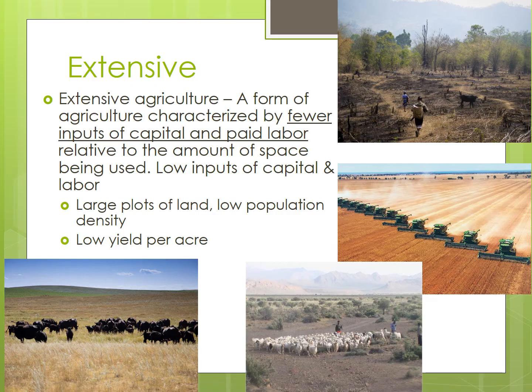In fact, shifting cultivation and nomadic pastoralism occupy the largest percentage of the world's land area that is dedicated to agriculture. Take a look at the agriculture map and you'll see huge areas devoted to slash-and-burn agriculture as well as nomadic herding.